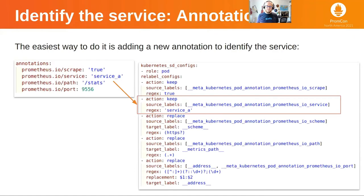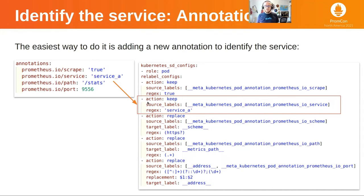Here's the first idea: we can use a new annotation. For example, we use prometheus.io/service, and in this pod this new annotation equals service A. To make a new job that identifies and selects the pods with the new annotation, we just add the keep action with the source label — the new annotation we created — service equals service A. And this job will select and scrape only these pods.